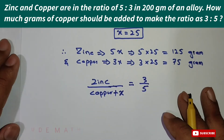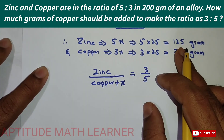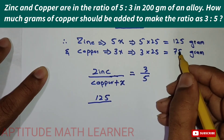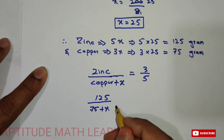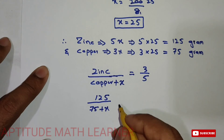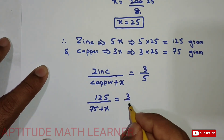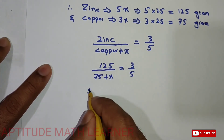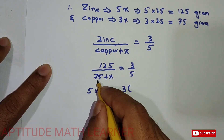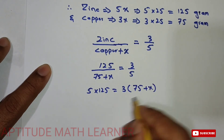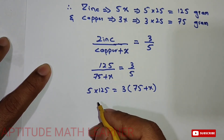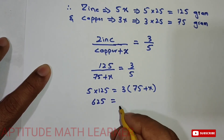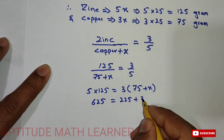Zinc is already 125 grams. Copper becomes 75 + x, where x is the amount added to make the new ratio 3:5. We set up the proportion: 125 / (75 + x) = 3/5, and cross-multiply: 5 multiplied by 125 = 3 multiplied by (75 + x), giving 625 = 225 + 3x.